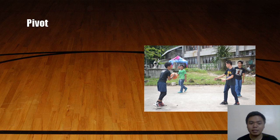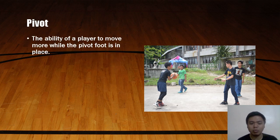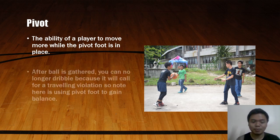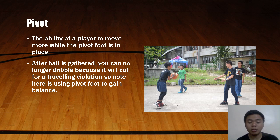Lastly is Pivot. Pivot is the ability of a player to move while keeping the pivot foot intact. After the ball is gathered, you can no longer dribble because it will be called traveling or a double dribble. Note that the pivot foot is used to gain balance.